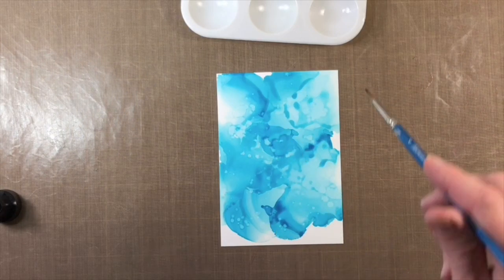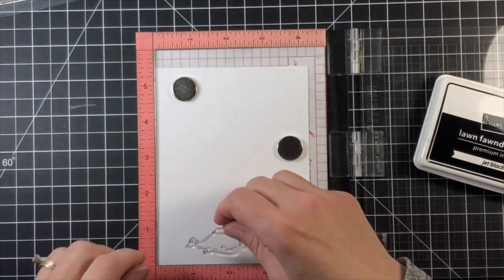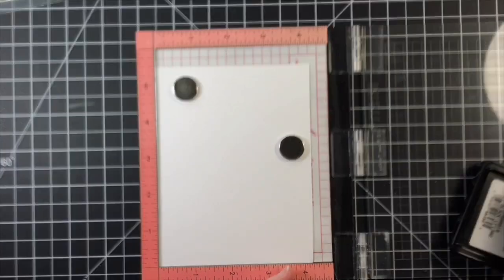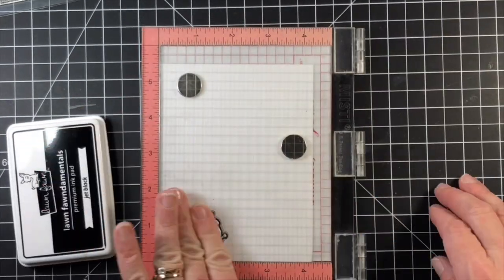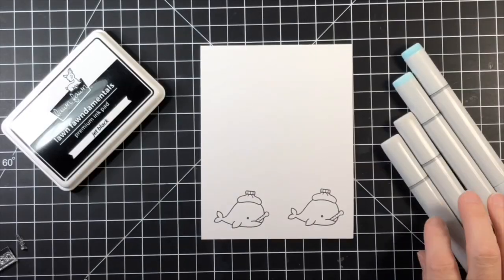All right, now that the background is done I'm going to stamp, die-cut, and color my whale image. I usually stamp in multiples just in case I make a mistake and need to color a second image. Any leftover die cuts I just keep in the folder with the stamp so they can be used on another project.